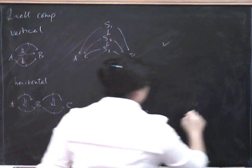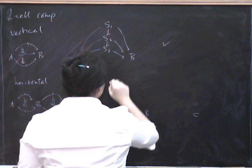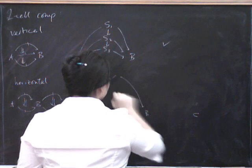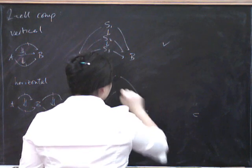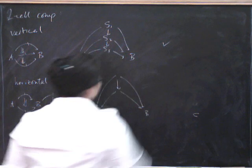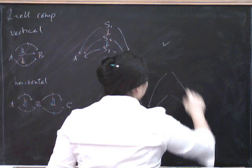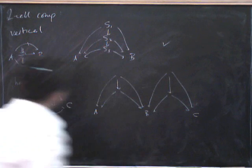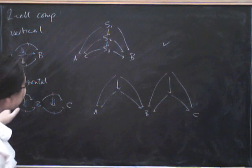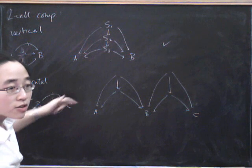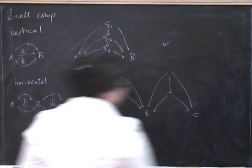So what does that look like? Well here's A, here's B, and here's C. We're going to have a span here, and another span here, with a cell going between them. And we're going to have a span here, and a span here, with a cell going between them. And so the result of this, while the source has to be the composite along the top, the target has to be the composite along the bottom.